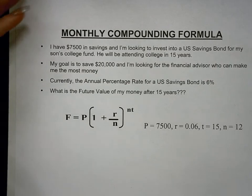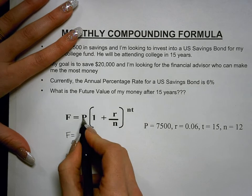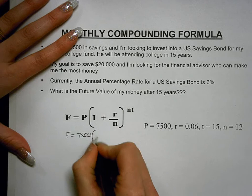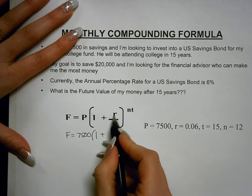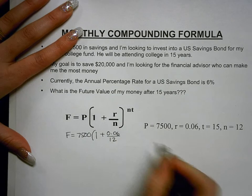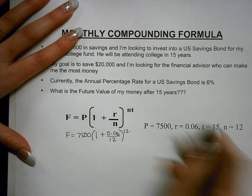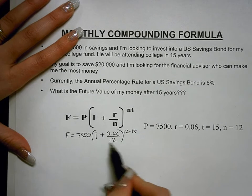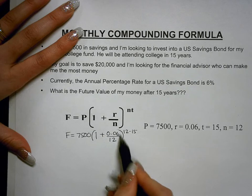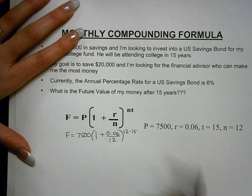Now we input these variables into the formula. The future value F is what we're trying to determine. F equals 7,500 multiplied by the quantity 1 plus 0.06 divided by 12, all raised to the 12 times 15th power. Note that 0.06 divided by 12 is the periodic rate. If any question asks for the periodic rate, it's R divided by N — 0.06 divided by 12 — and the result of that division is the periodic rate.